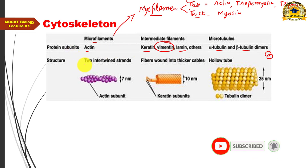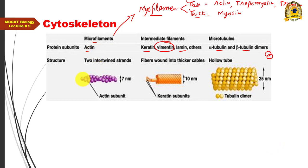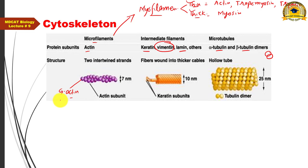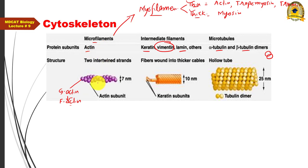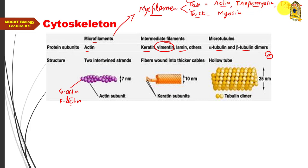The structure of microfilaments shows two chains of F-actin twisted together. F-actin is formed from many G-actin (globular actin) units combined in a chain. In muscle cells, thin myofilaments show actin along with tropomyosin and troponin, while thick myofilaments are made of myosin and show a different structure.